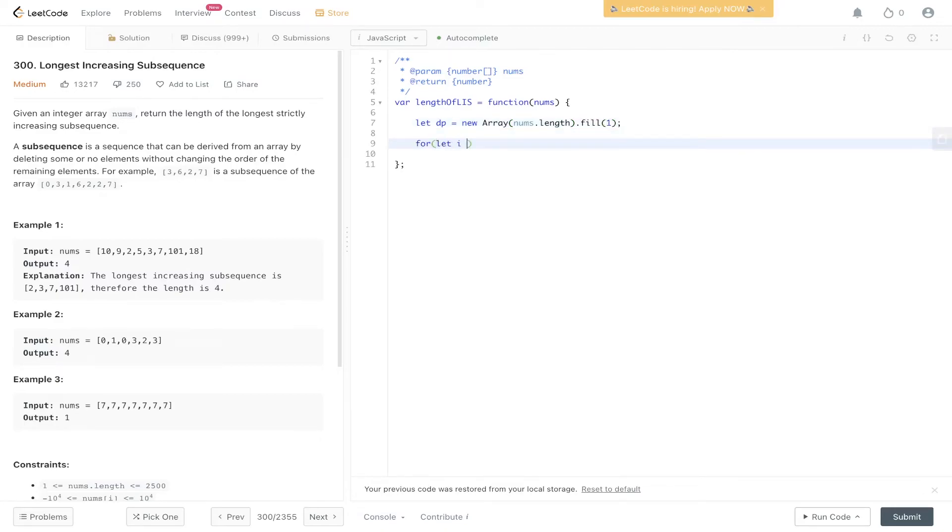Then we need to loop through from i equals 1, so we start at the first value. i is less than or equal to nums.length, because we want to go up to and include the last value. Now we need to loop backwards, so we loop backwards where j equals i. j needs to be greater than or equal to 0, j minus minus.